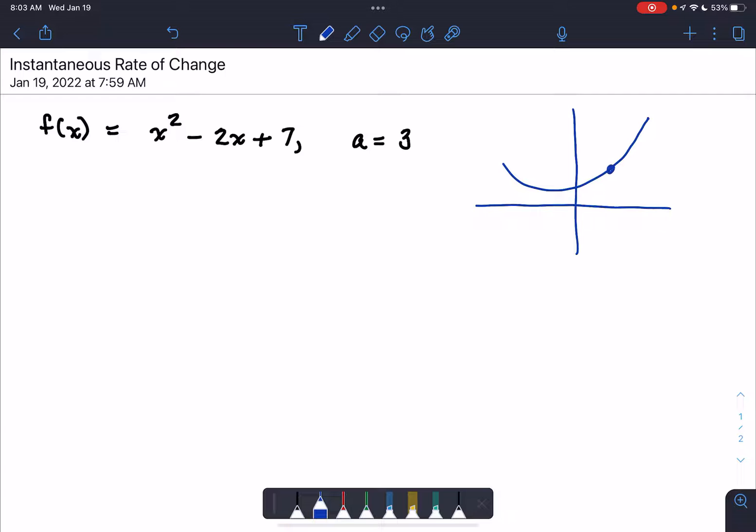Instantaneous rate of change takes one point, well it technically takes two points, but then what we're going to do is let's say this is the point where we want to find the instantaneous rate of change, the one on the left here.